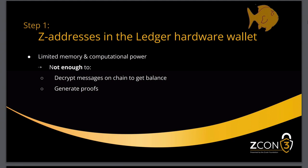Basically, hardware wallets have very limited memory and computational power. For a transparent transaction, the process between the host computer and the Ledger is straightforward: the host sends the transaction to be signed, the Ledger parses the data to extract the amount and destination address, displays this information for the user to validate, then signs and returns the transaction. That's easy.